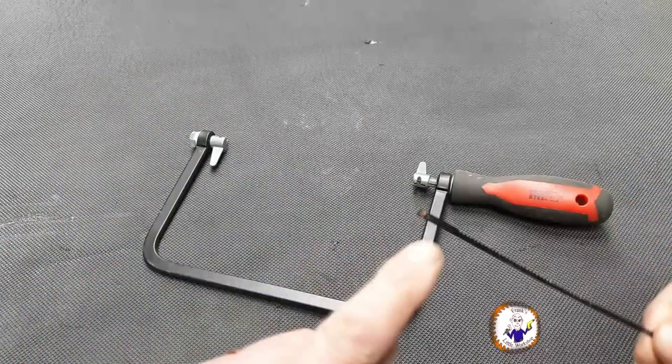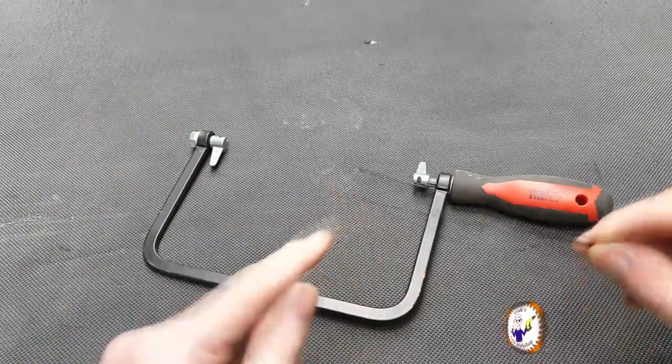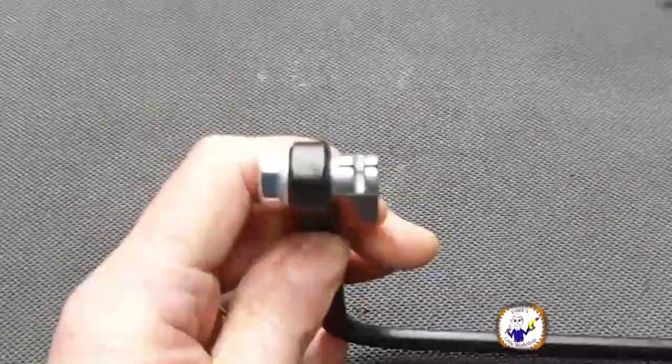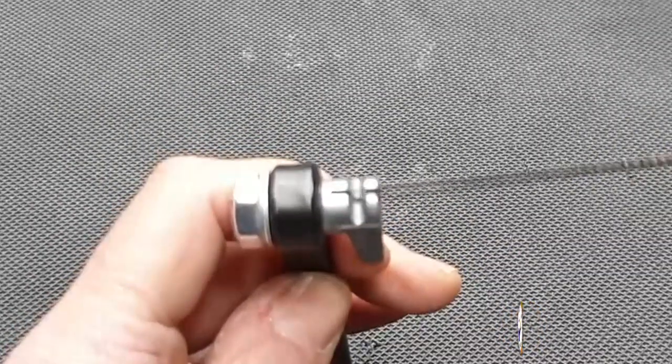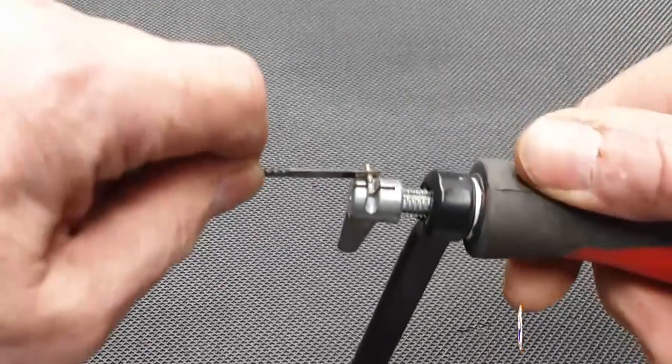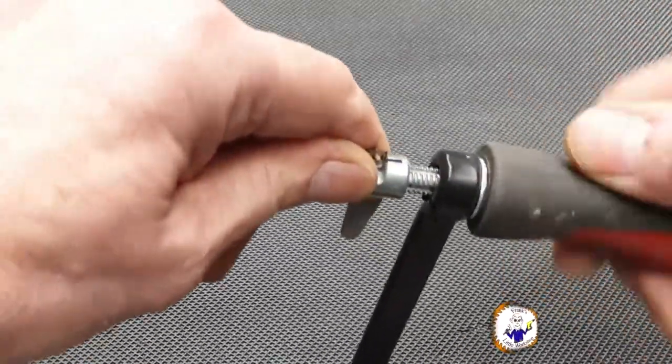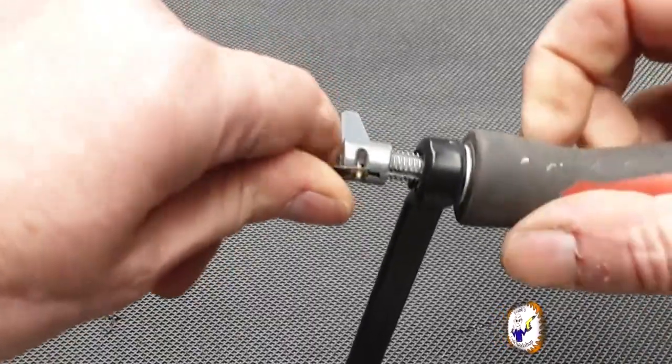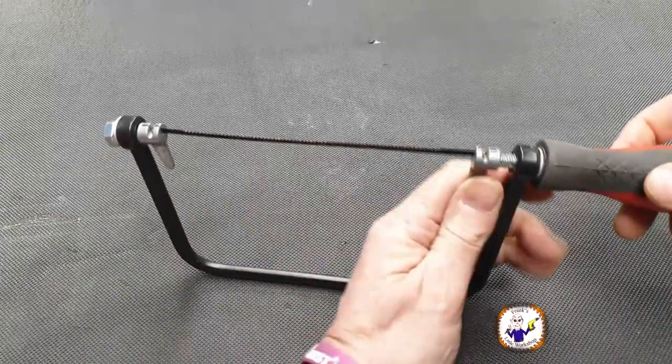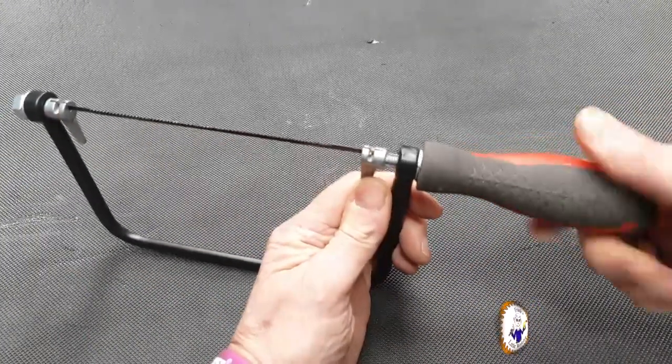Refitting the blade is a simple process of reversing the process of taking it apart. These little hooks at the end here, or these little pins, they hook into here like this, and then the same on this end. Hold this with your thumb and then just tighten the handle.